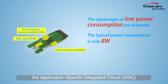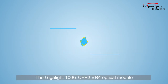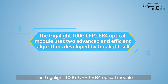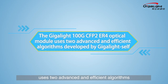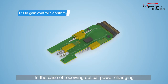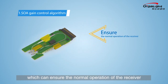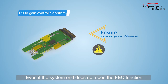An application-specific integrated circuit is used to implement the management data input/output interface, which has strong compatibility. The Gigalite 100G CFP2 ER4 uses two advanced algorithms developed by Gigalite. The first is the SOA gain control algorithm: in the case of receiving optical power changing, the closed-loop adaptive algorithm can quickly lock the working current and adjust the amplification performance of the SOA.